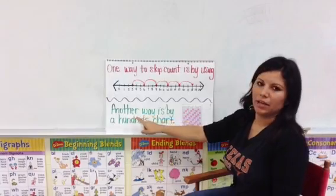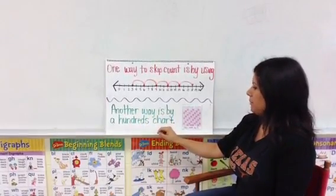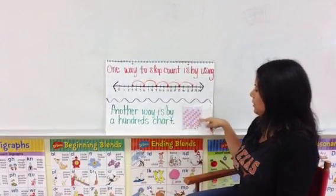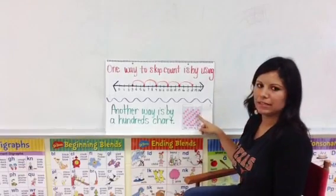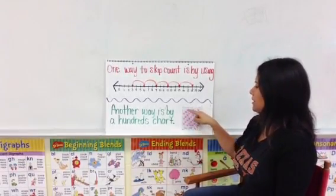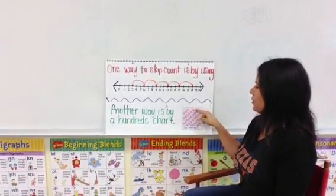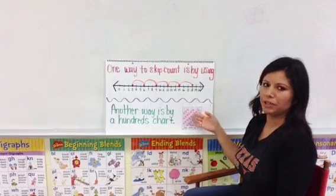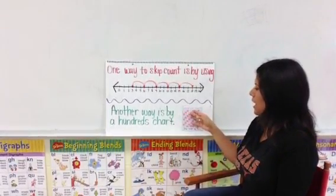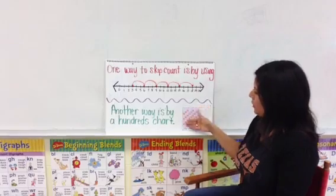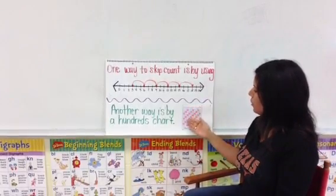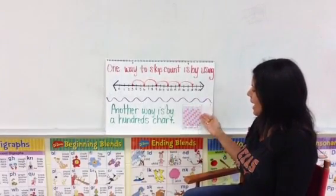And yet another way that you can skip count is by using a hundreds chart. On here you see a hundreds chart, and there is a pattern. Here we are counting by threes, and every third number is colored. So when you look, you have a pattern of one, two, three — it's colored. Every three is colored. And when you look at the overall picture, you see a pattern going at an angle.